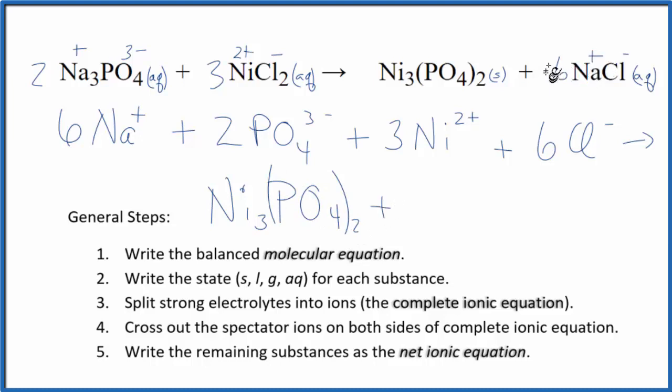Remember we said plus and minus there. So 6 sodium ions plus 6 chloride ions. So this is the total or complete ionic equation.